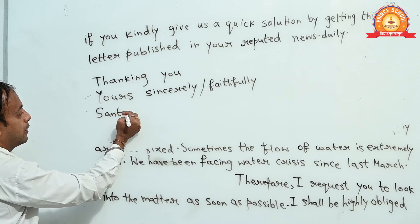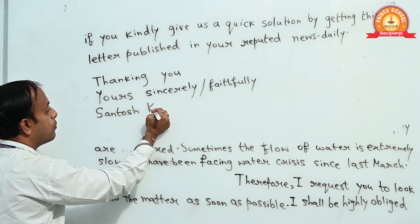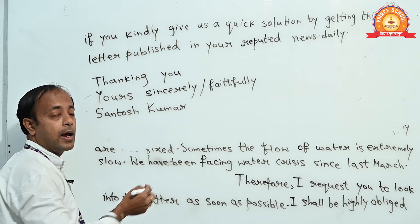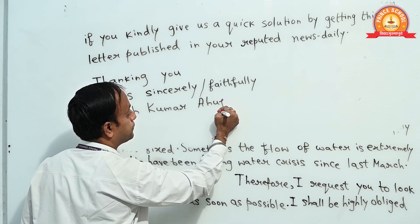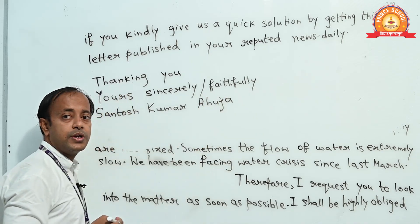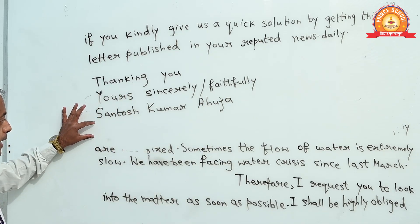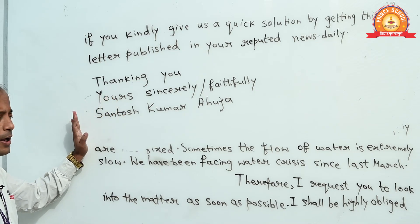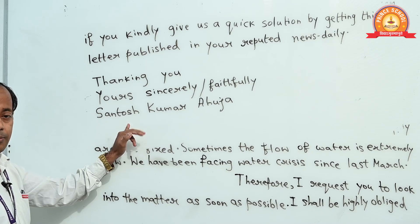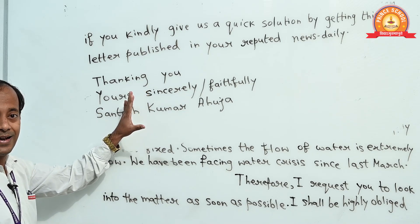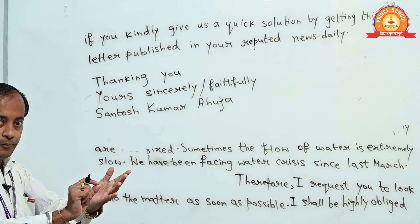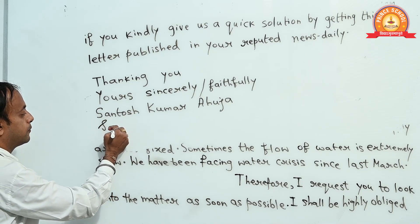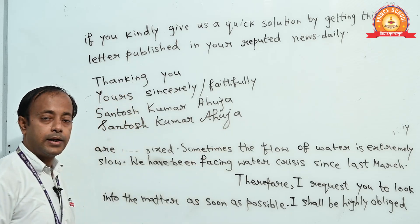Write 'Yours Sincerely' on the left-hand side, then write your full name: Santosh — S capital — Kumar — K capital — Ahuja — A capital. After writing your name, give your signature. You may not write the signature but I think it looks better if you do, because here you are not sending an email — you are sending a letter written with a pen on paper. So you may write your signature as well. Here the letter is complete.